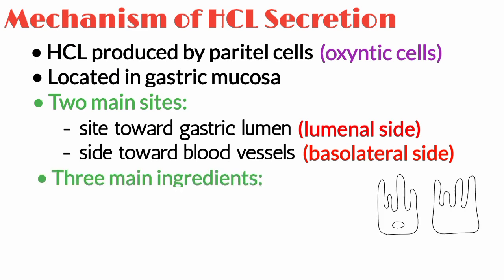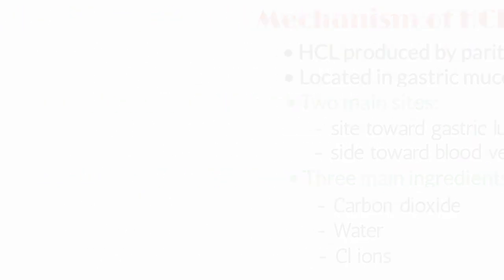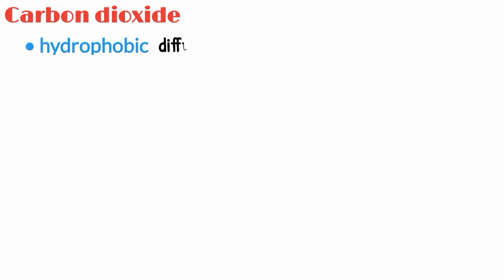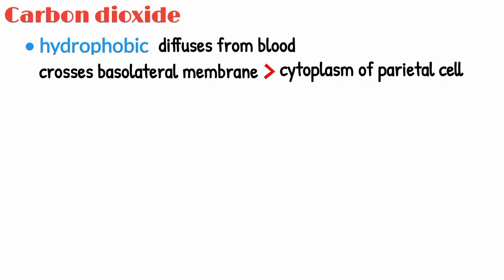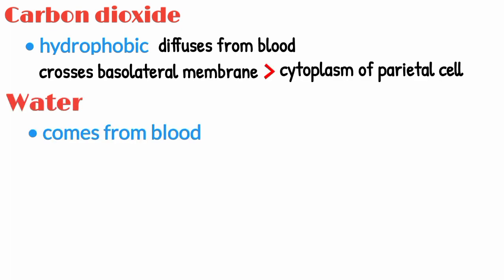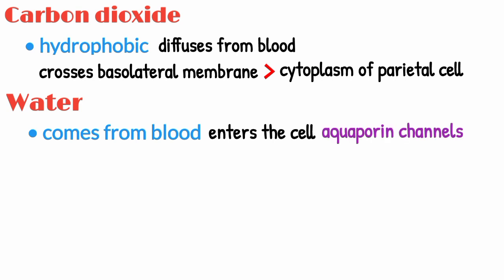There are three main ingredients responsible for the production of HCL: carbon dioxide, water, and chloride ions. Carbon dioxide, being hydrophobic, diffuses from the blood and crosses the basolateral membrane into the cytoplasm of the parietal cell. Water comes from the blood and enters the cell through aquaporin channels in the basolateral membrane.